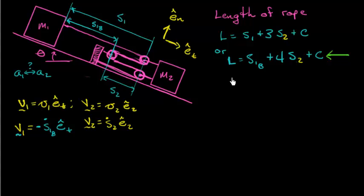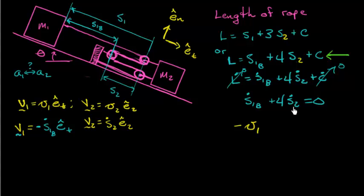Now that we've decided we're going to use this version of the length, let's take that time derivative. I get L dot equals S1b dot plus 4S2 dot plus C dot. Those constants, when we take the derivative of them, are zero. So this leads us to S1b dot plus 4S2 dot equals zero. If I substitute in my relationships between the S's and the V's, something kind of nice happens. S1b dot is minus v1, and S2 dot was v2. So minus v1 plus 4v2 has to add up to zero.